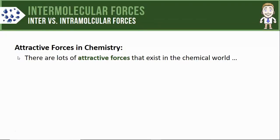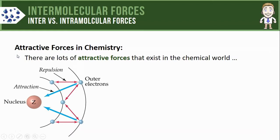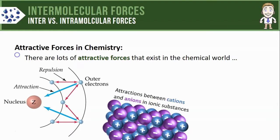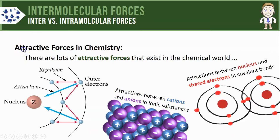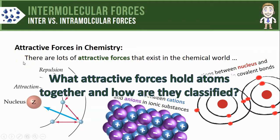Remember that we've already studied lots of different attractive forces that exist in the chemical world, like the attraction between electrons and the nucleus that holds an atom together, or the attraction between cations and anions in ionic substances, or even the attraction between the nucleus and shared electrons in a covalent bond. In this video we're going to take a complete look at all of these attractive forces that hold atoms together and classify them properly.